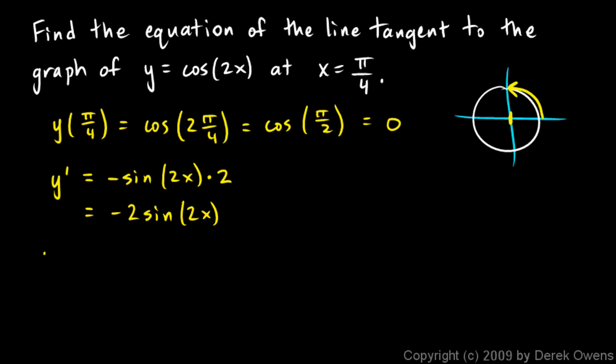And now I need to find y primed at π over 4. So I'll just put in π over 4 for x there. So I get negative 2 times the sine of 2 π over 4, which is π over 2. So negative 2 times the sine of π over 2. And the sine of π over 2, you can see right there at that point, is 1. So this just equals negative 2.